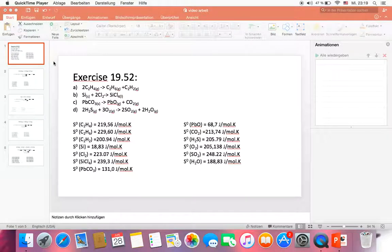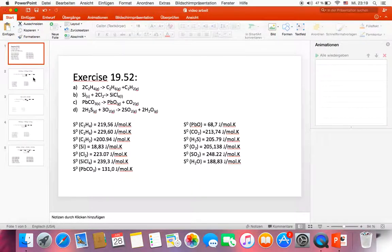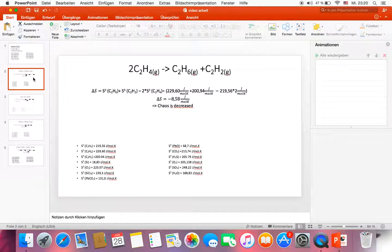Today I'm going to show you how to calculate delta S for the following reactions. In this exercise we have four reactions and I've already looked up the entropy S of all of those substances. Now let's begin with reaction a.